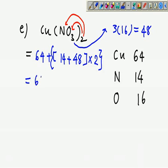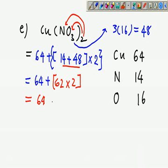What I do is I settle the calculation inside the square bracket first. This will give me 62, 62 times 2. So you get 188, the relative mass. Let's go back to the picture.